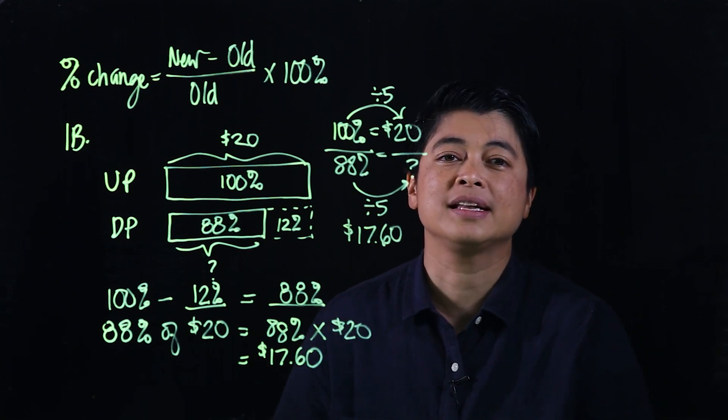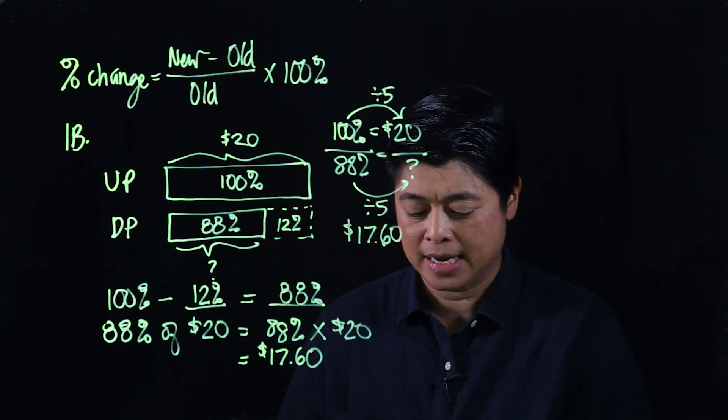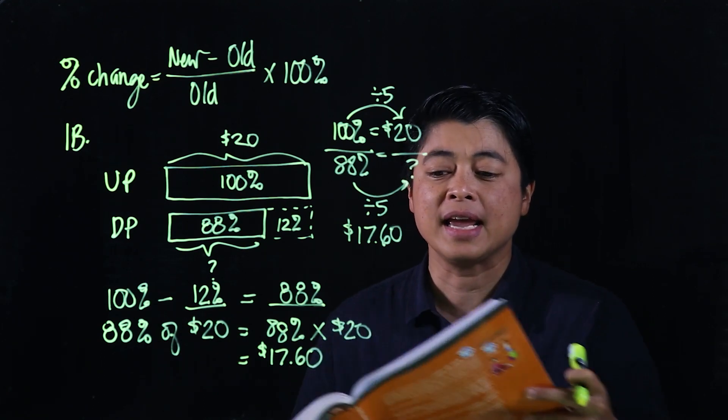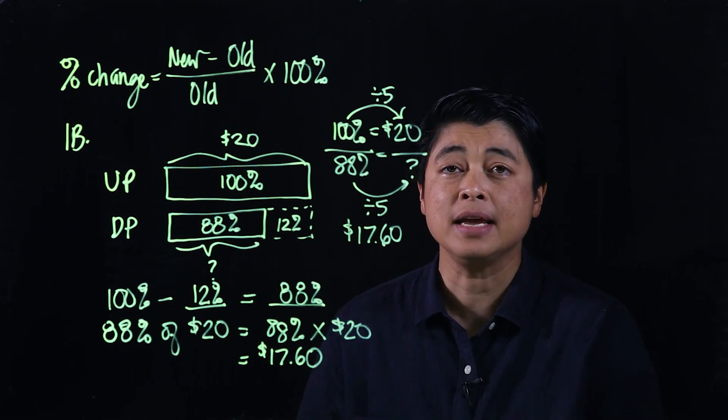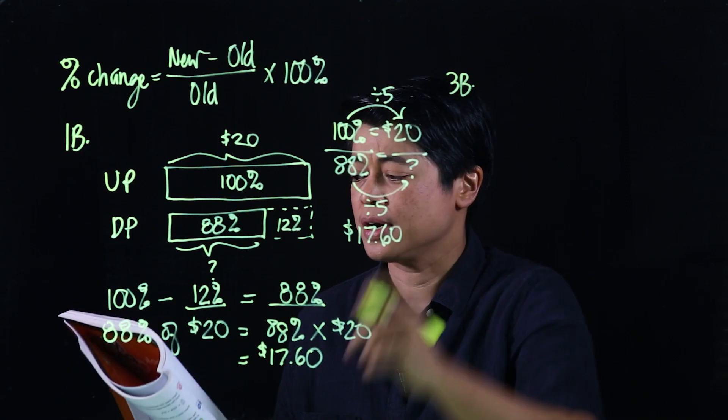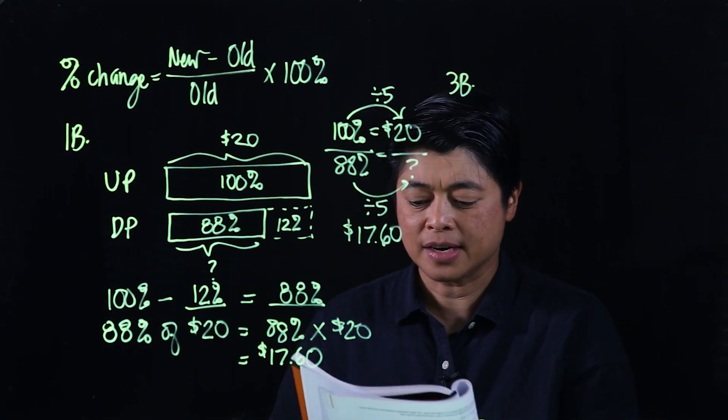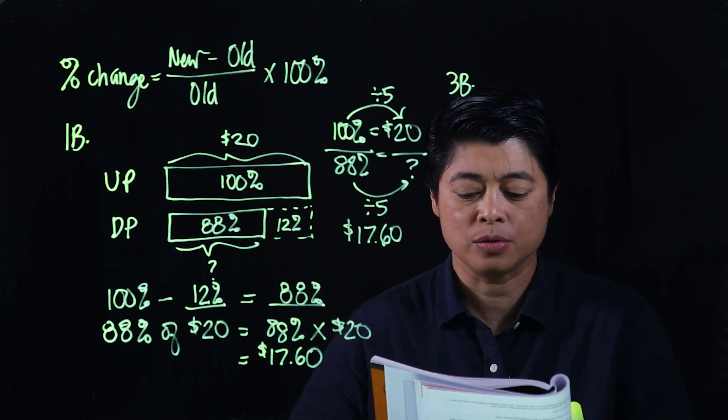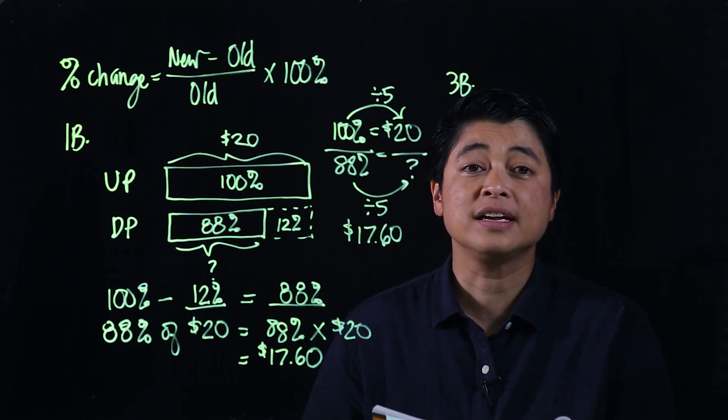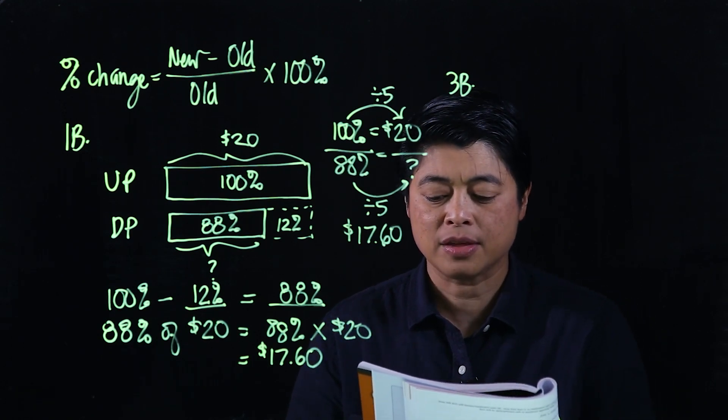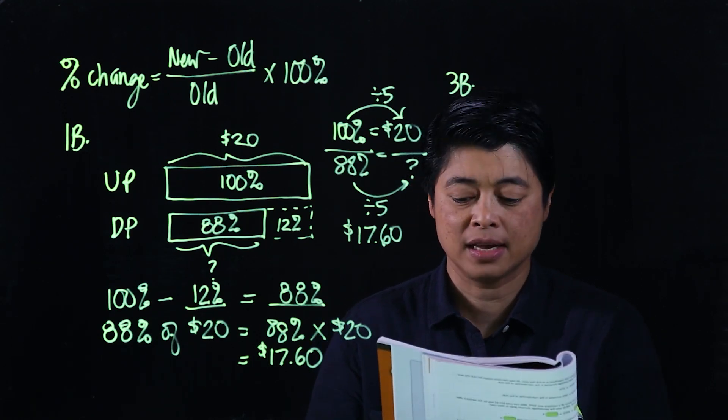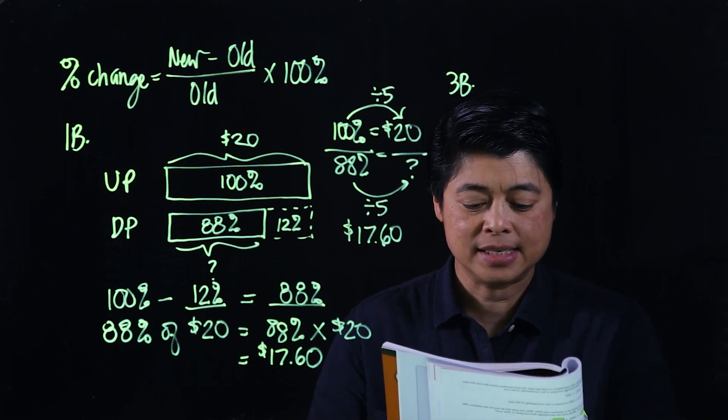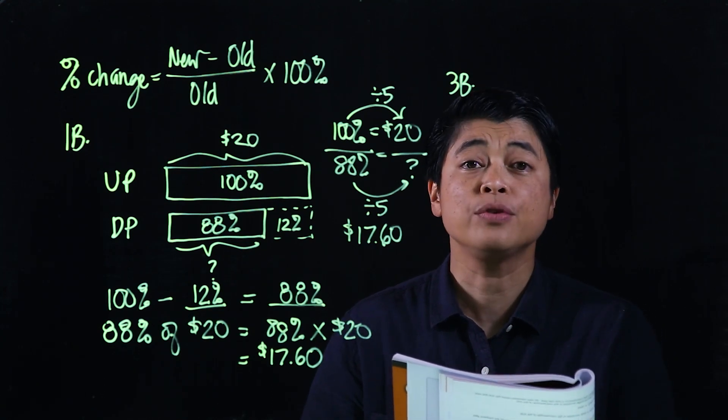Now another problem that's the same thought process is on page 118. So on page 118, it says this is 3B. It says the number of visitors in Singapore in January was 1,412,000. The number of visitors in February was 1,334,900. Find the percentage decrease in the number of visitors from January to February.